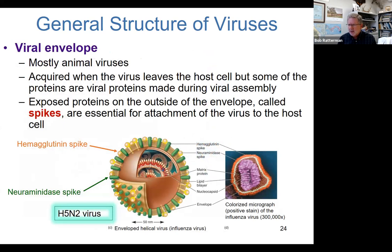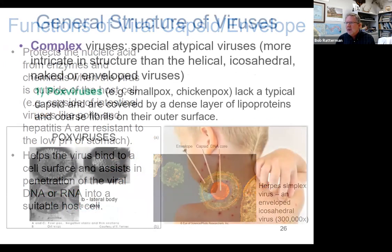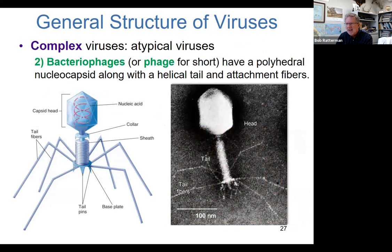Many envelope viruses have glycoprotein spikes, which give them unique shapes and functions in terms of docking with certain cells that have the proper receptor sites. Some viruses are given abbreviated hyphenated names like H5N1 or H5N2, describing the particular type of spikes on the surface — typically glycoproteins. We also alluded to complex viruses: the pox viruses and bacteriophages, unique atypical viruses.